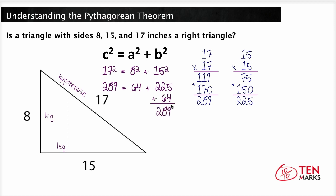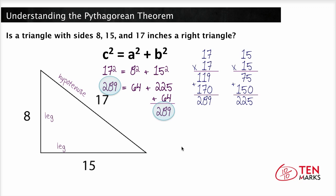5 plus 4 is 9, 2 plus 6 is 8, 2 plus nothing is 2. And here we get that 289 equals 289. So since the Pythagorean Theorem is true for this triangle, this is a right triangle.